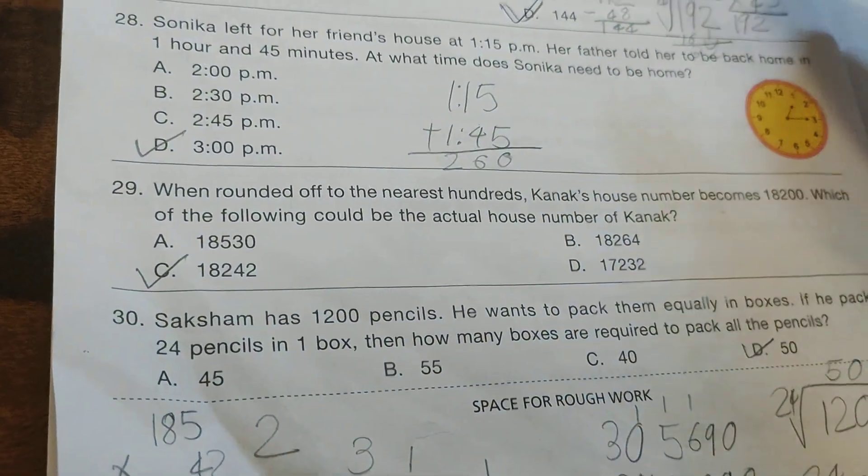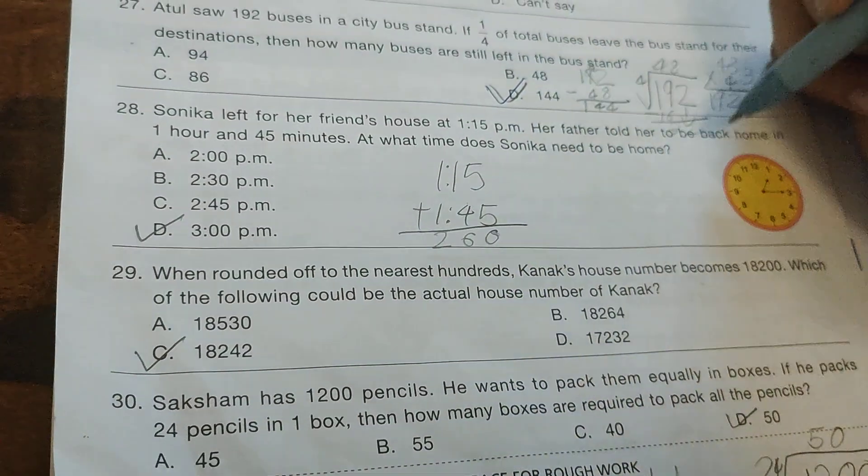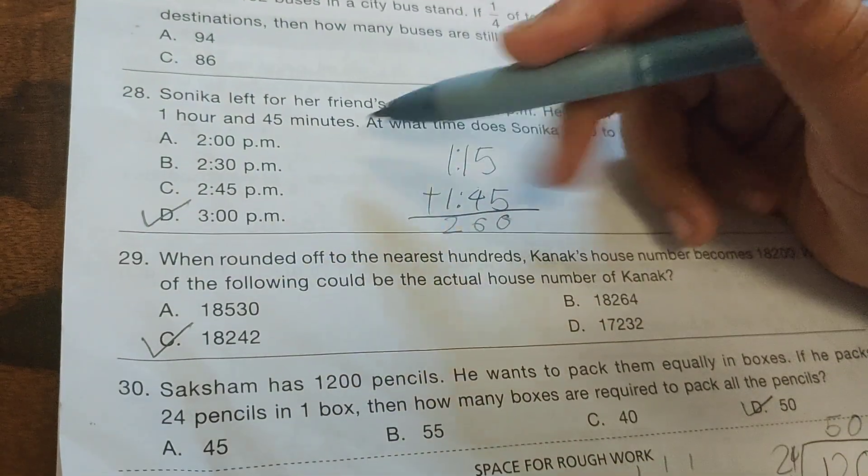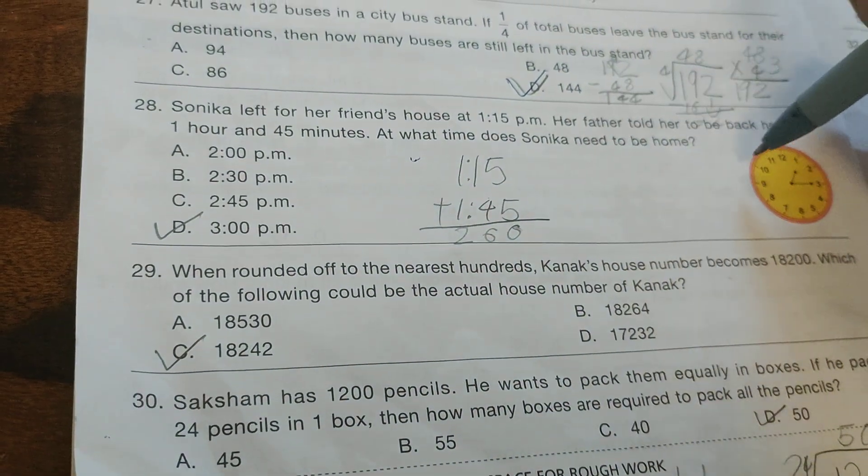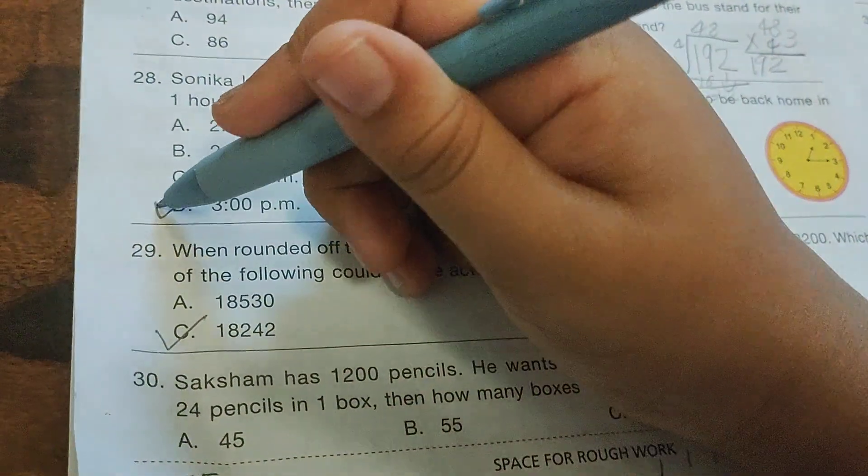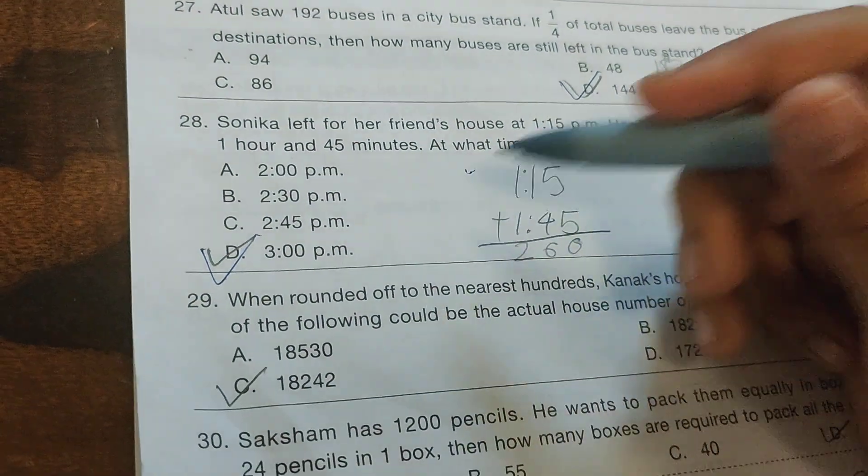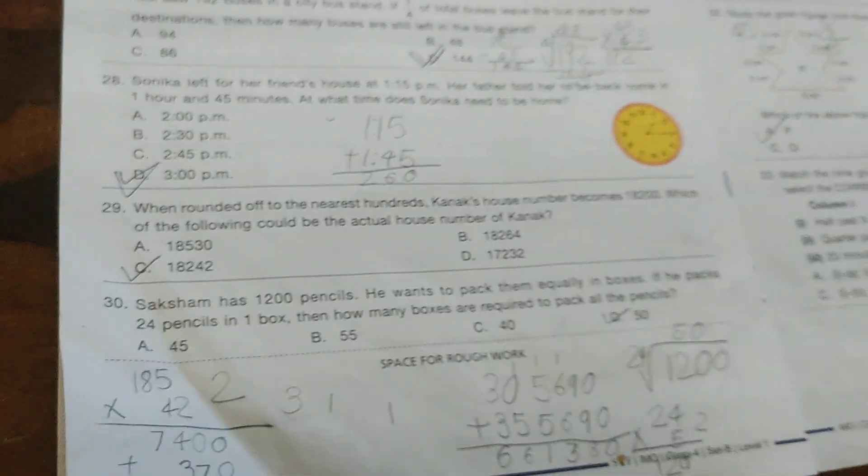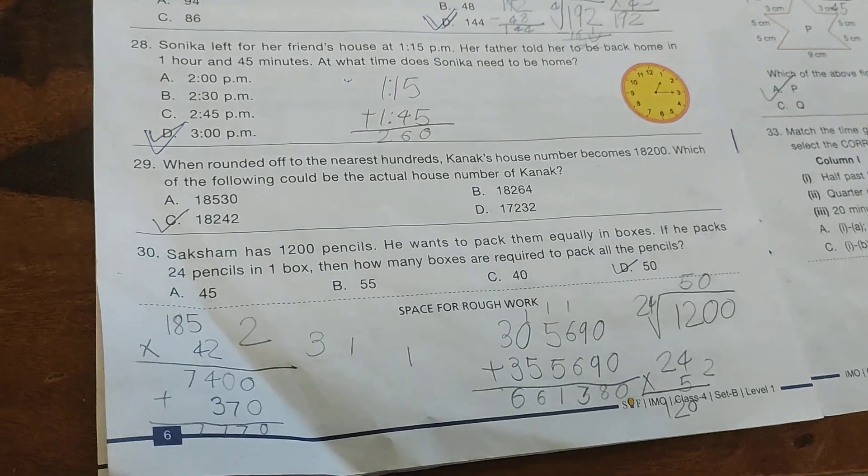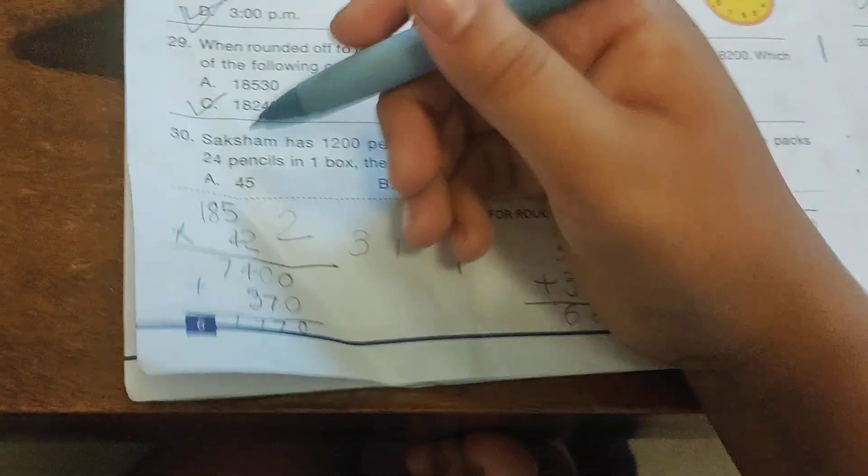Sonika left for her friend's house after 1:15 PM. Her father told her to be back home in 1 hour 45 minutes. At what time does Sonika need to be home? The option is 3:00 PM.